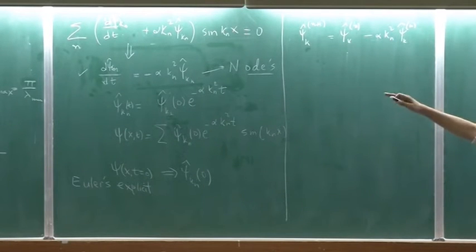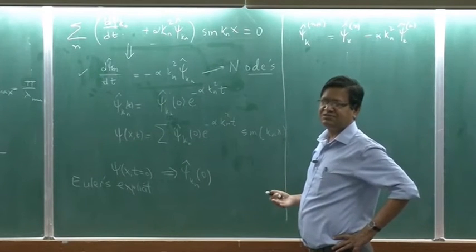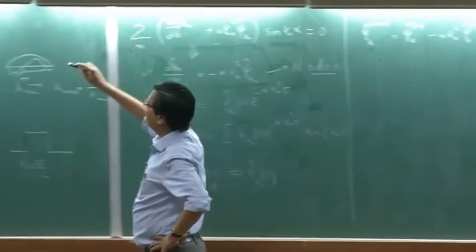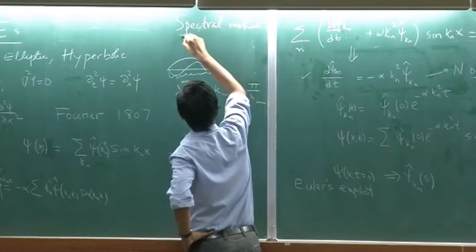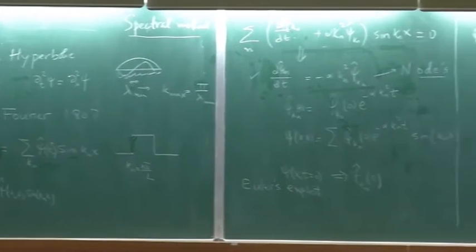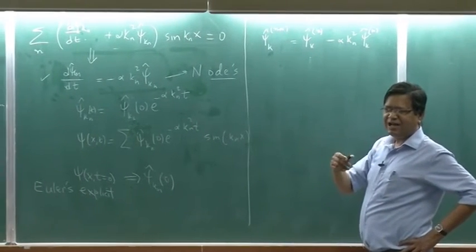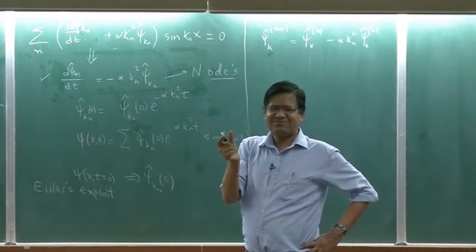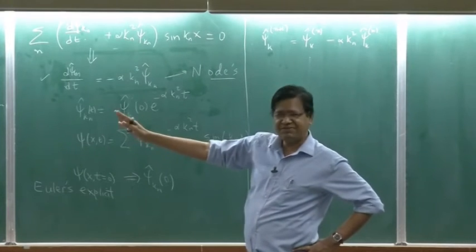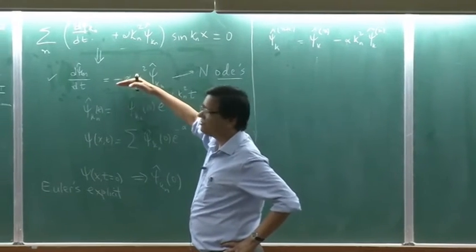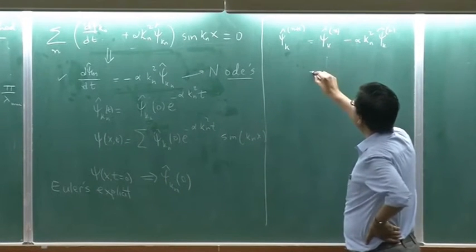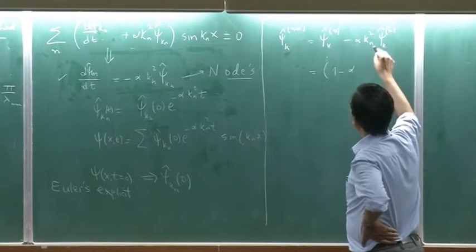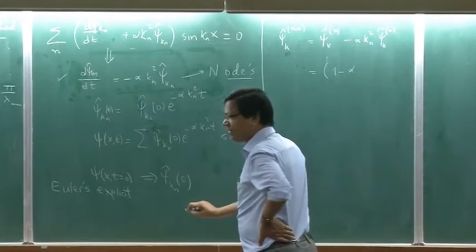n+1 equal to psi hat of k n, now this is the right hand side minus alpha k_n² psi k n. By the way, this is spectral method, so some of you have chose spectral method. These using Fourier transform. You can use this method to solve many differential equations, PDEs. This is really the spectral method. Spectral means I am breaking into different spectrum, that prism spectrum that is what we do. I have broken into different spectrum. These are equations for different wave numbers or different colors of light if you like. We are solving this. Now, we have 2 things. One is I have discretized in time and I discretized in wave number.